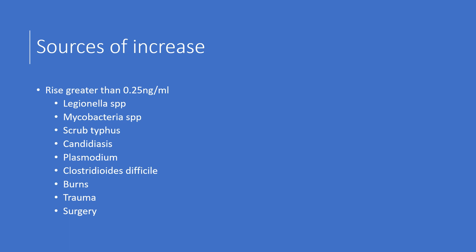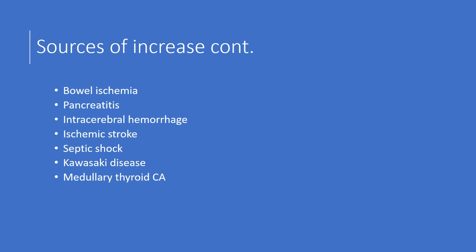What are the sources of increased procalcitonin? If the level is greater than 0.25 nanograms per mL, we might be dealing with Legionella species, Mycobacteria species, scrub typhus, candidiasis, Plasmodium — that could be Plasmodium malariae, Plasmodium vivax, Plasmodium falciparum — or Clostridioides difficile, formerly known as Clostridium difficile. It could also be burns, trauma, or even surgery. Other sources of increase could be bowel ischemia, pancreatitis, intracerebral hemorrhage, ischemic stroke, septic shock, Kawasaki disease, or medullary thyroid carcinoma.